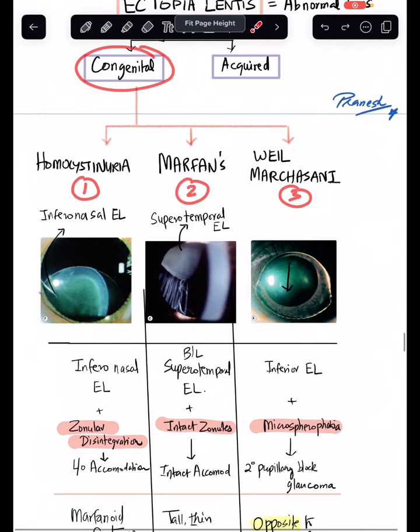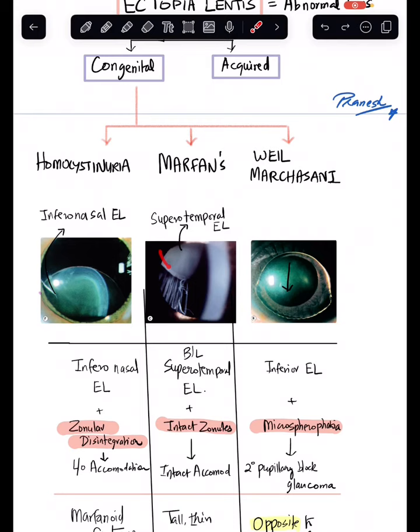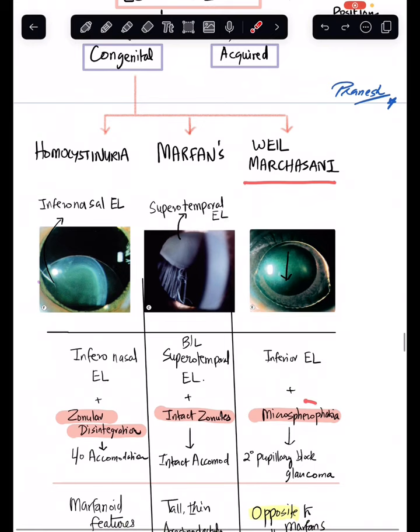In homocystinuria, there is an infero-nasal displacement of the lens. In Marfan syndrome, there is a supero-temporal displacement of the lens. In Weill-Marchesani syndrome, there is microspherophakia.